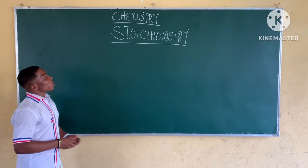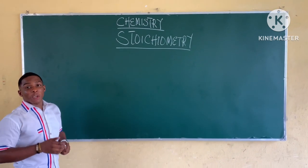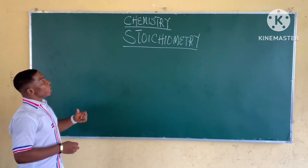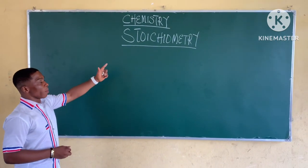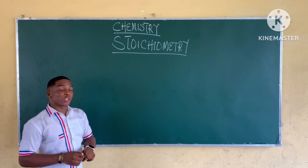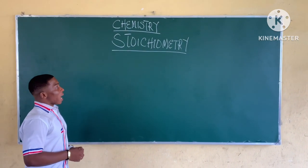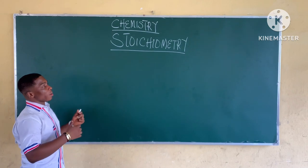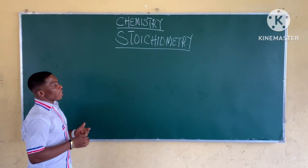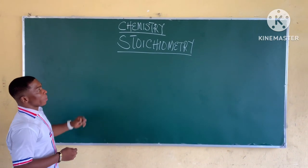Today in chemistry, we'll be learning stoichiometry, a very important aspect of general chemistry. In today's topic, we'll start from the definitions and look at calculations involving stoichiometry, where we'll look at the relationship between products and reactants, and we'll balance the equation in any reaction. So let's start from the definition of stoichiometry.